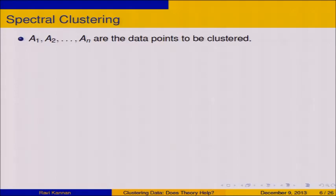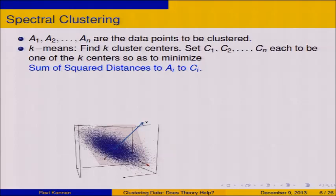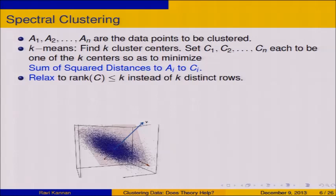Let's say that there are N data points, each of them is a vector. The k-means clustering wants you to find K cluster centers C1 through CK. C1 is the cluster center for A1, and so on — each of these needs to be one of the K centers you've found, and you want to minimize the sum of squared distances between Ai and Ci. Now I don't know how to solve this problem — this is NP-hard. But here's a similar problem I can solve: instead of requiring that each Ci be one of K distinct vectors, relax the constraint to say the rank of C is at most K instead of having K distinct rows.